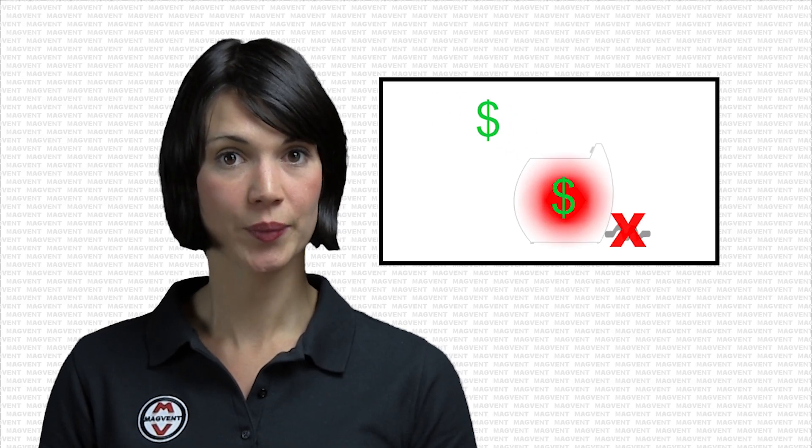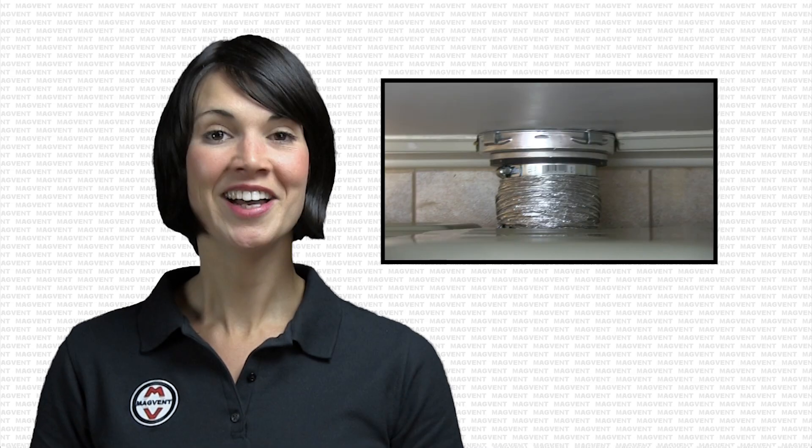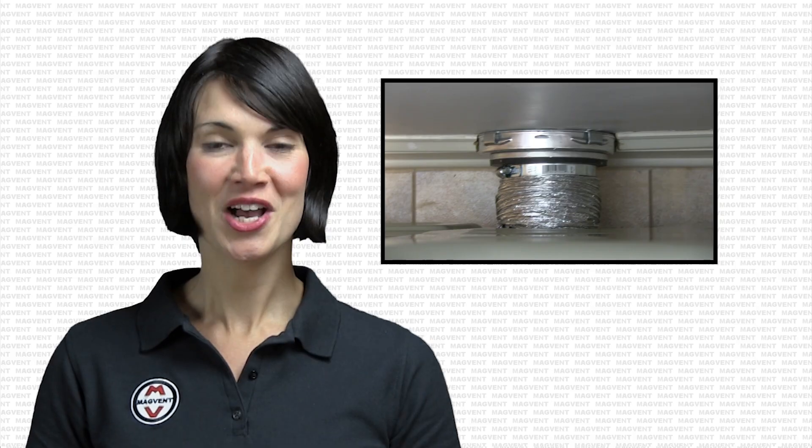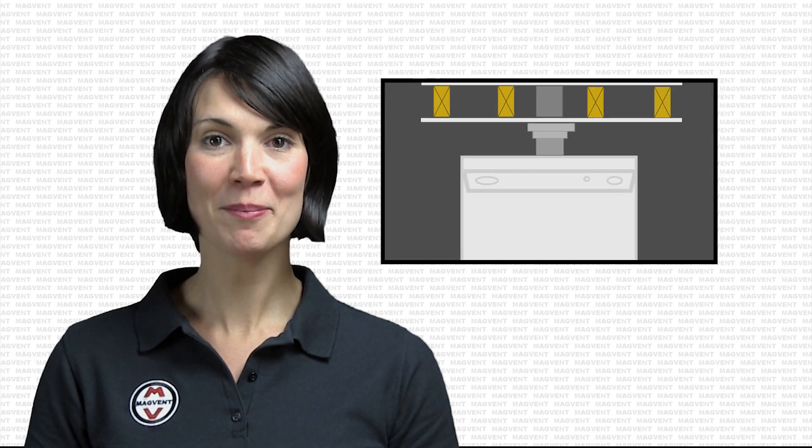If it's MagVent behind your dryer, you have likely installed a minimum path vent and your home is safer and you are saving money every month. Before MagVent, you had to have a transition duct of sufficient length to allow the installer to get between the dryer and the wall to make a connection.